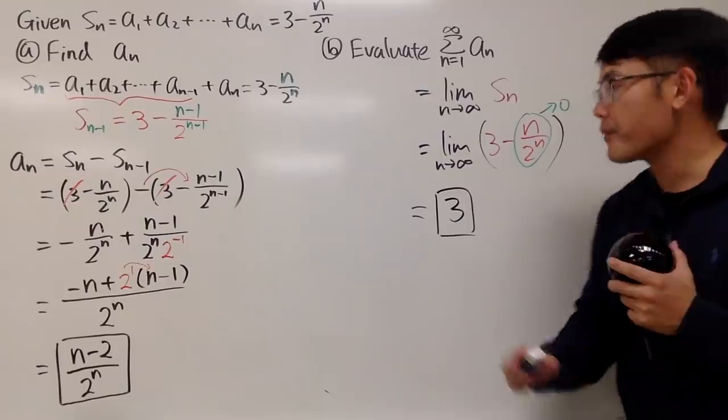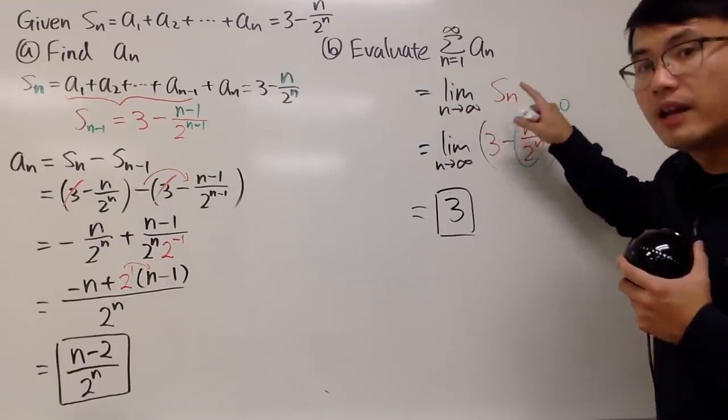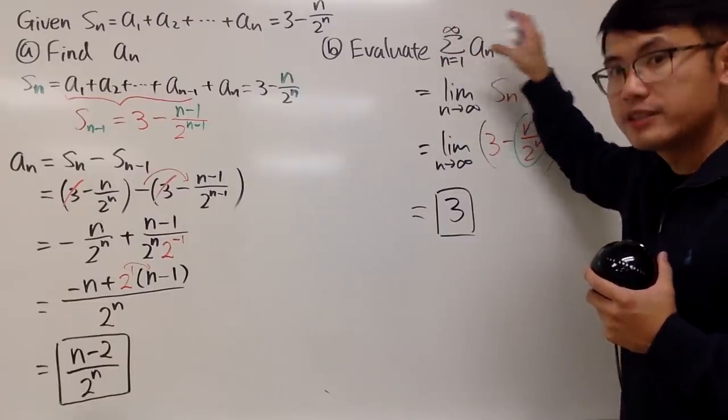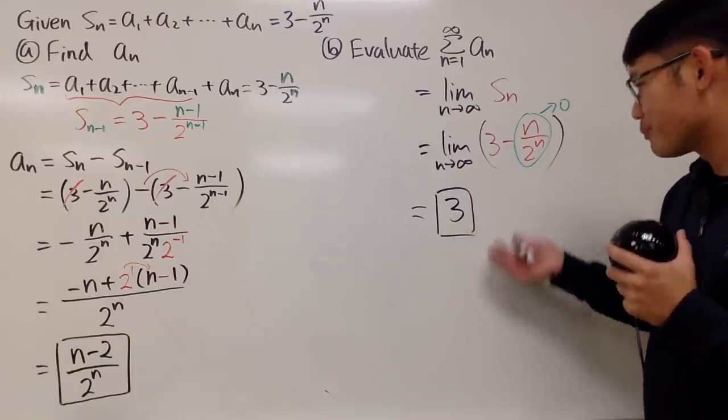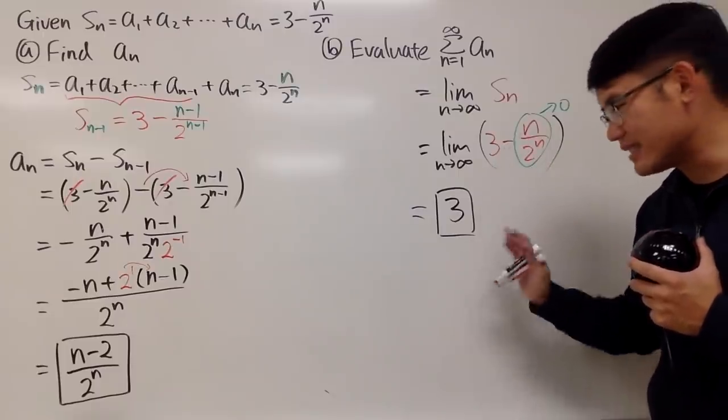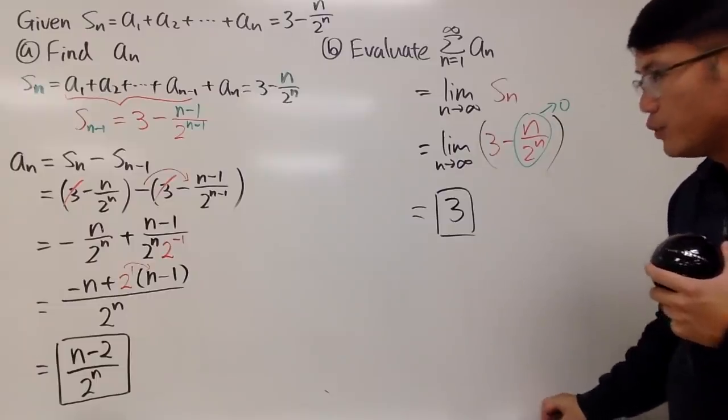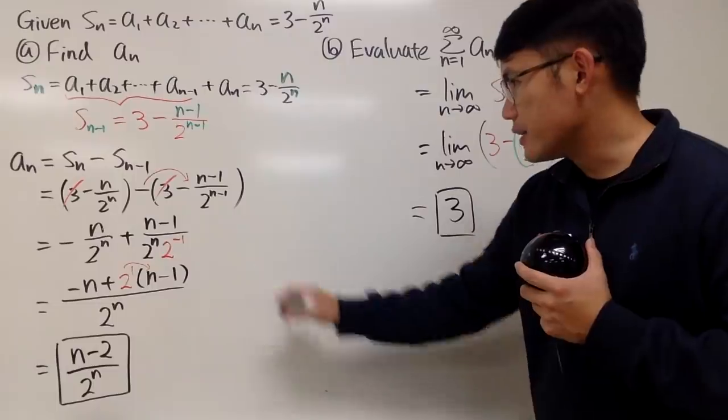But be careful, though. When we are doing the limit as $n$ goes to infinity of $S_n$, this right here will tell us the answer for the infinite series already. Do not say this is 3, which is not 0, and you know, you can just say test for divergence. No, that's not it. We are not doing test for divergence right here. If you look at right here, okay? So here is the deal.